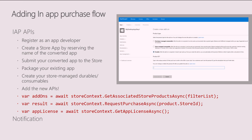Now we can go ahead and add the actual APIs to our application. The main APIs for the in-app purchase flow are: getAssociatedStoreProductsAsync, which fetches all the durables and consumables we have in the Dev Center; requestPurchaseAsync, which purchases our durable; and getAppLicenseAsync, which gets the license to make sure we've already acquired this durable, so we don't repurchase the same thing again. We're also going to add a notification when we upload the photo to the server.